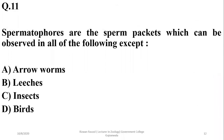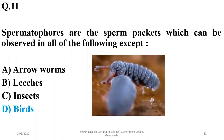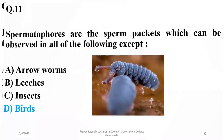Number eleven: spermatophores are the sperm packets which can be observed in all of the following except — they can be observed in arrow worms, leeches, insects, and other invertebrates which release their sperms in the form of sperm packets that are later taken up by the female. But birds do not produce such structures.